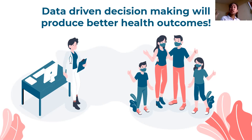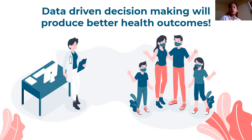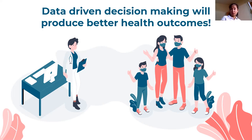The means to help us make better decisions is through health information system. Health information system is our tool. When health professionals know how to use the health information system and read its reports, and base their decisions on those reports, health outcomes will be better. For example, if they learn that COVID-19 cases are rising in Baguio, based on that information they can decide to deploy more contact tracers or tighten the borders — so the mayor can decide better for better health outcomes.